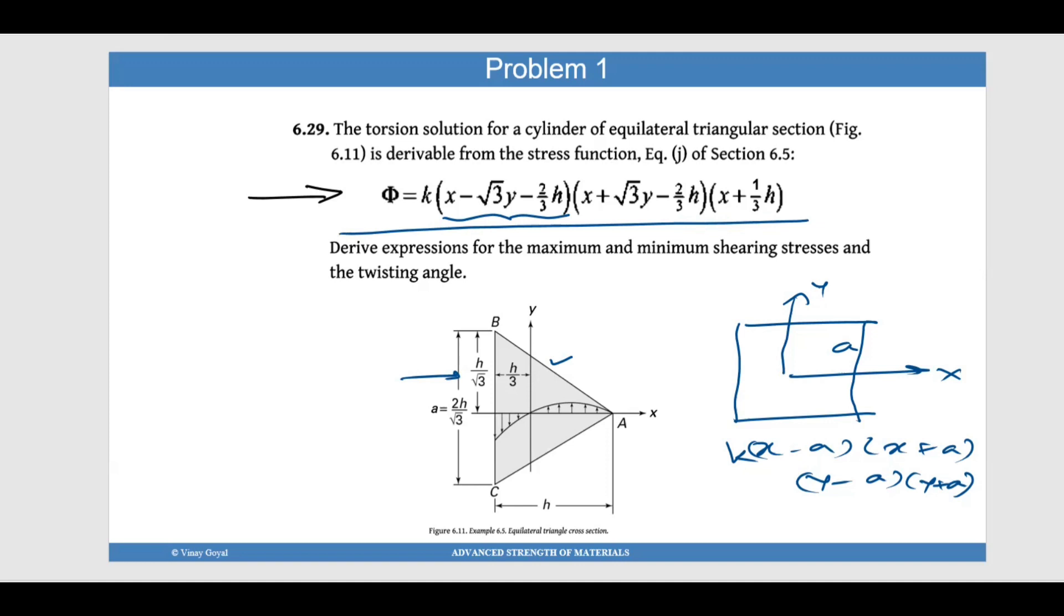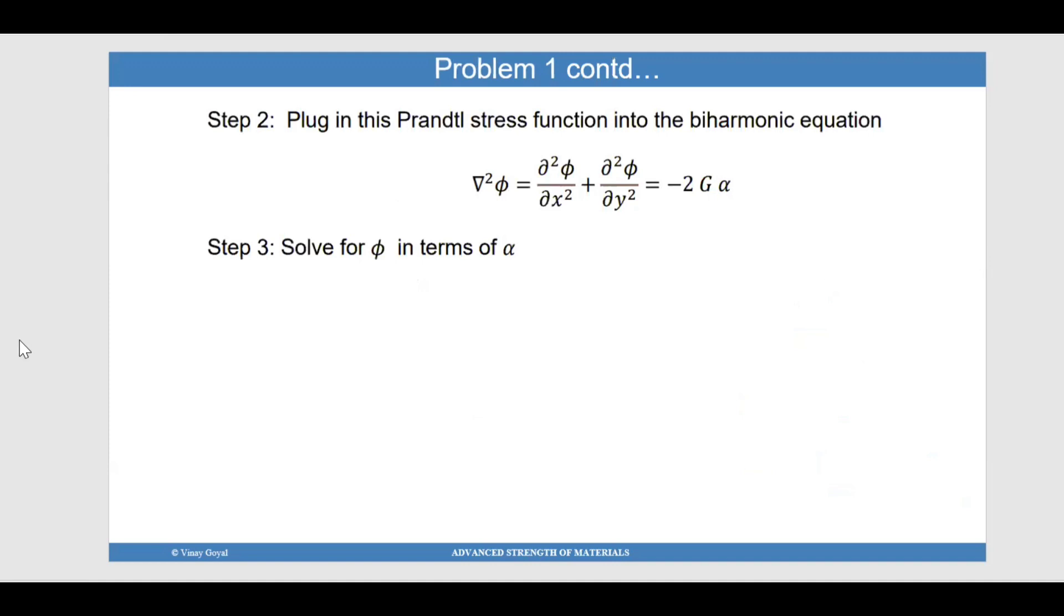So in this, everything else, you don't know what K is, so you have to find out what K is, and that is where you go through all the steps. So now that step one was, what is the Prandtl function? You have that, you generally assume a function, it's generally given either way. So you plug in the Prandtl function into the biharmonic equation, and you say it equals minus 2G alpha. And this will basically give you an equation in K. So you now get K in terms of all the known constants.